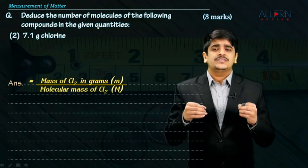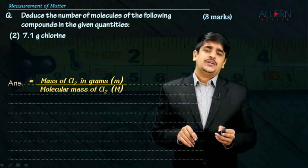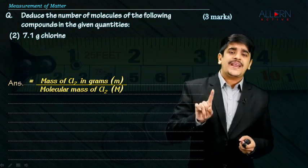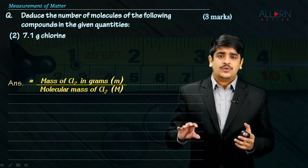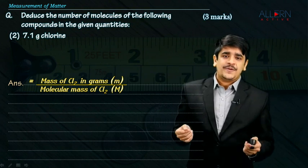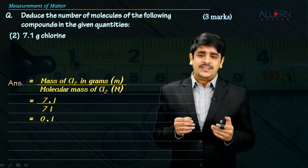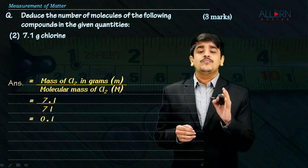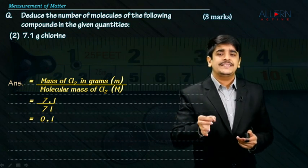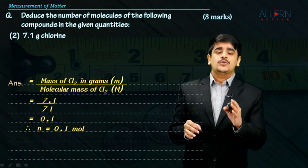The mass of chlorine given in the sum is 7.1 grams. For the molecular mass: 35.5 is the atomic weight of one atom of chlorine. Since chlorine is diatomic — Cl₂ — I multiply 35.5 by 2, which gives 71. So the number of moles is 7.1 divided by 71, which gives 0.1 moles. That means 7.1 grams of chlorine contains 0.1 mole of chlorine.